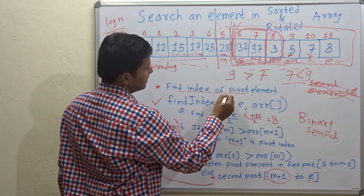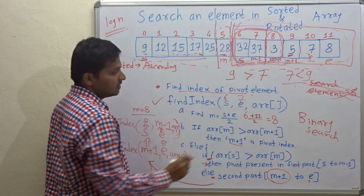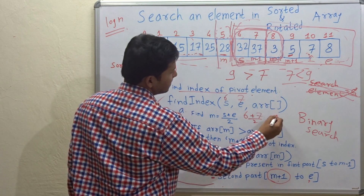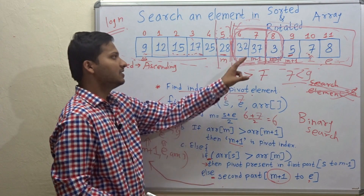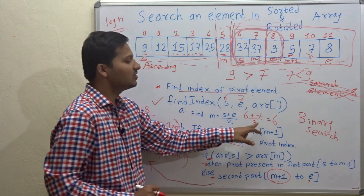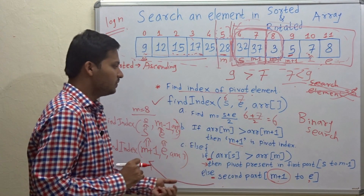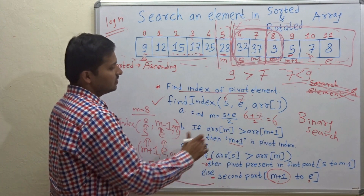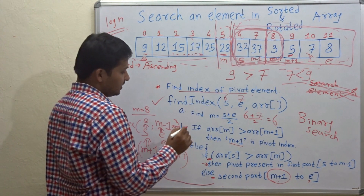Now s is 6 and e is 7. m = (6 + 7) / 2 = 13 / 2 = 6 (integer answer). This is going to the worst condition of binary search. Now check: is array[6] greater than array[7] — is 32 greater than 37? No, it is not. So we go to the else part.